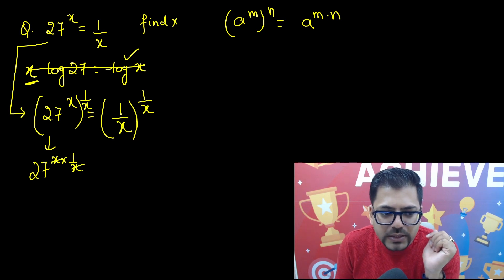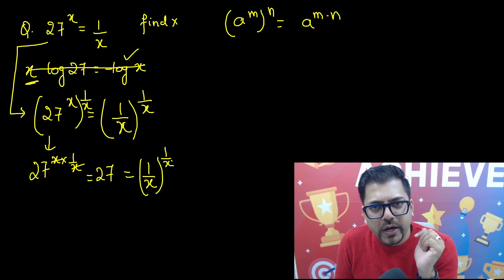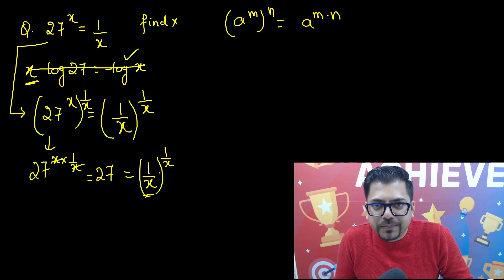Cancel ho jayega. So this will get cancelled. You will be able to get this 27. And here you have 1 upon x whole raised to power 1 upon x. So I hope you are understanding that the two numbers are the same. Isn't it?